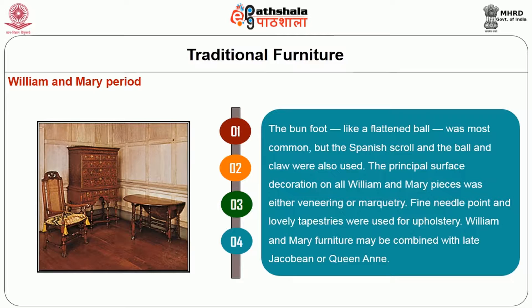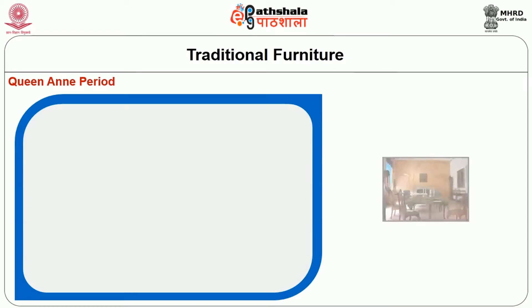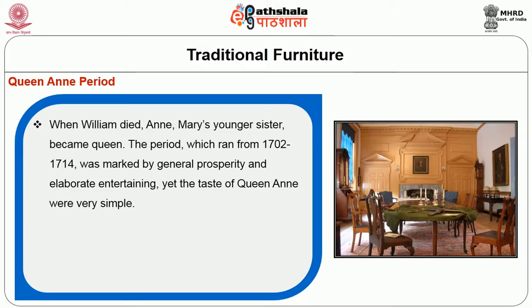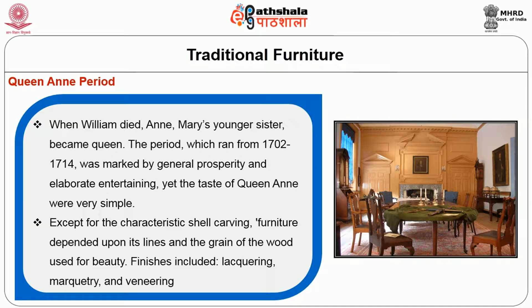Queen Anne Period: When William died and Mary's younger sister became the queen, the period ran from 1702 to 1714 and was marked by general prosperity and elaborate entertaining. Yet the taste of Queen Anne was very simple except for characteristic shell carving. Furniture depended upon its lines and the grain of the wood for beauty. Finishes included lacquering, marquetry, and veneering.